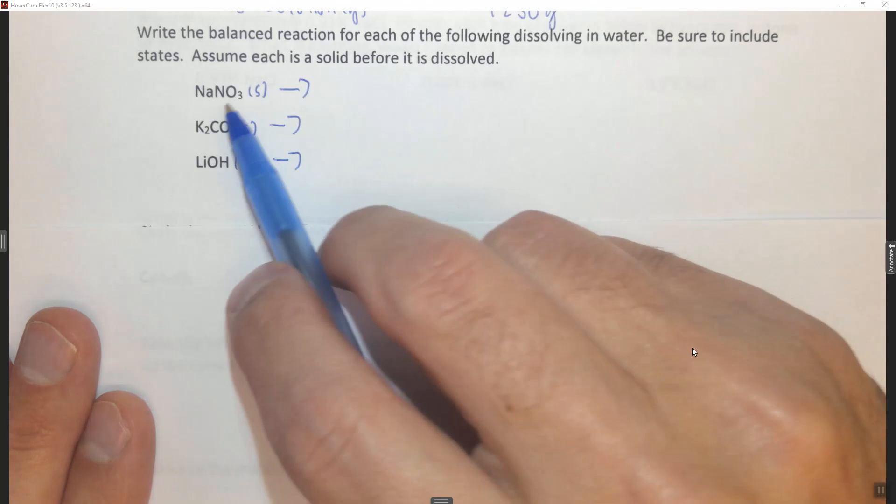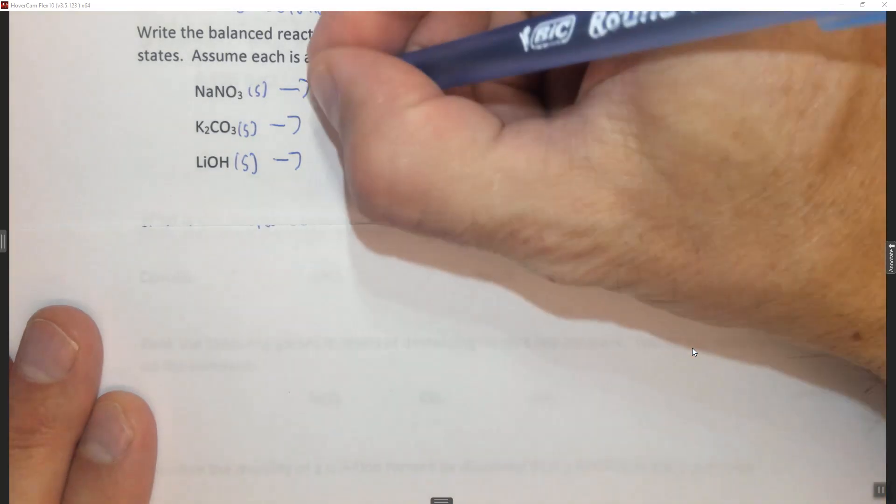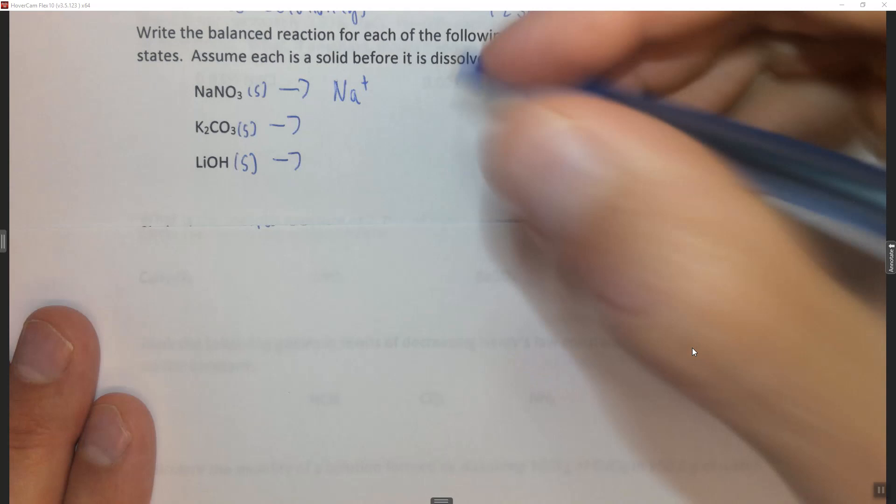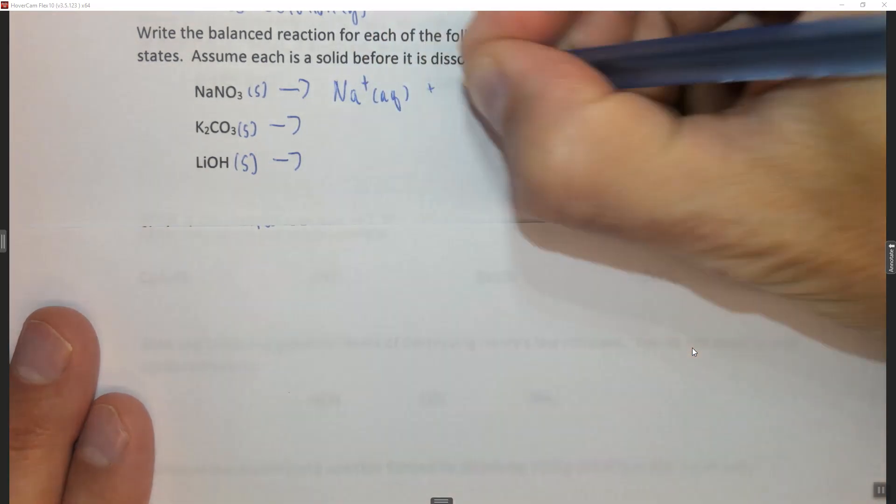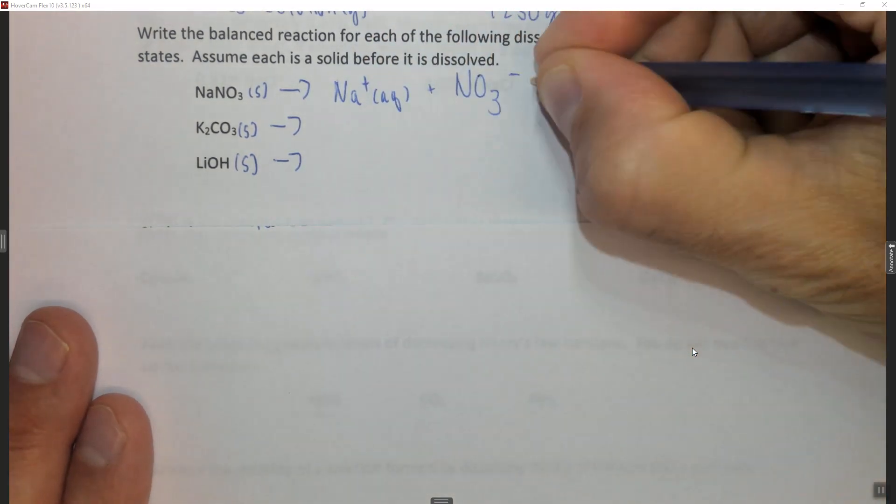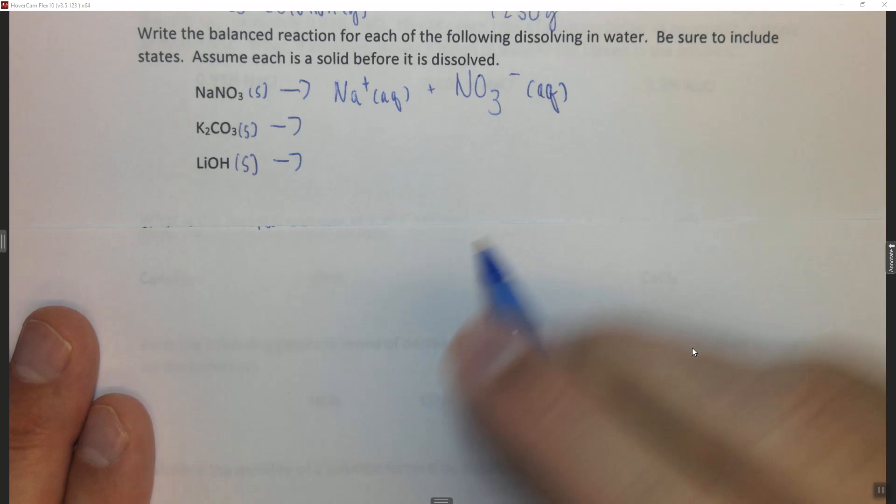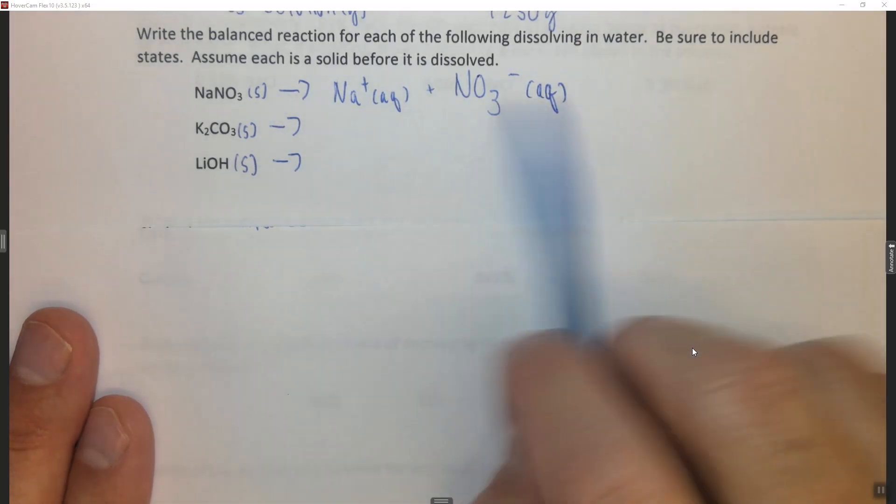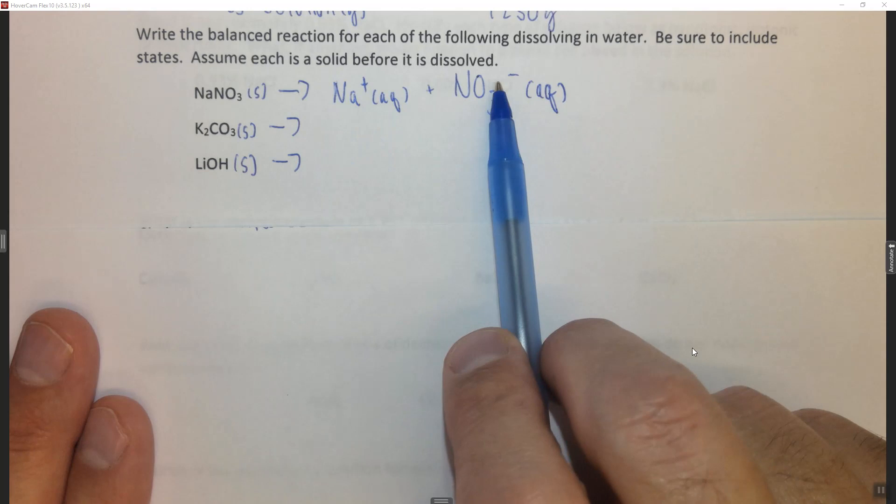So if we have NaNO3, this is going to break up into Na+, again the metal with the charge, aqueous, and NO3 minus nitrate, aqueous. So the polyatomic ion does not break up into nitrogen and three oxygens, it stays together. This just disassociates, it doesn't really break up.